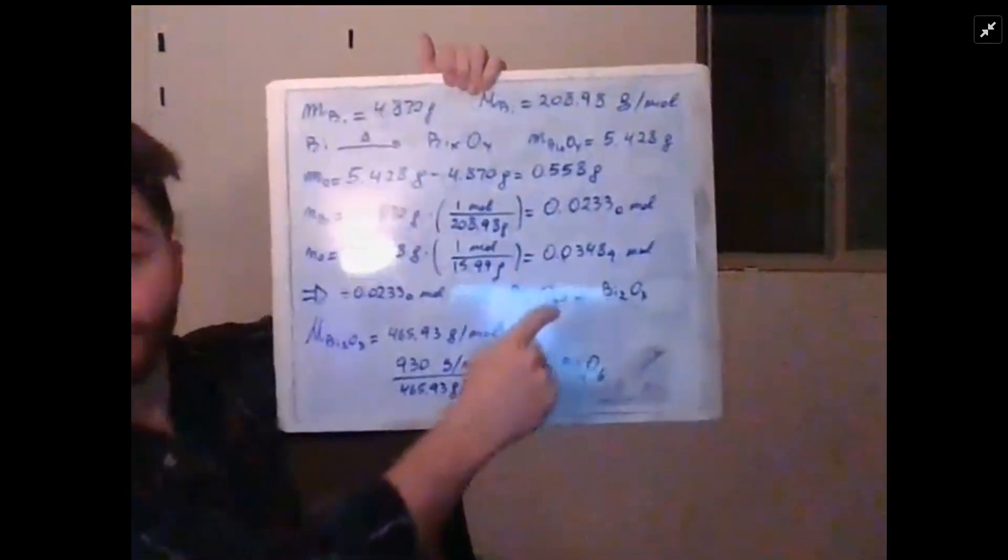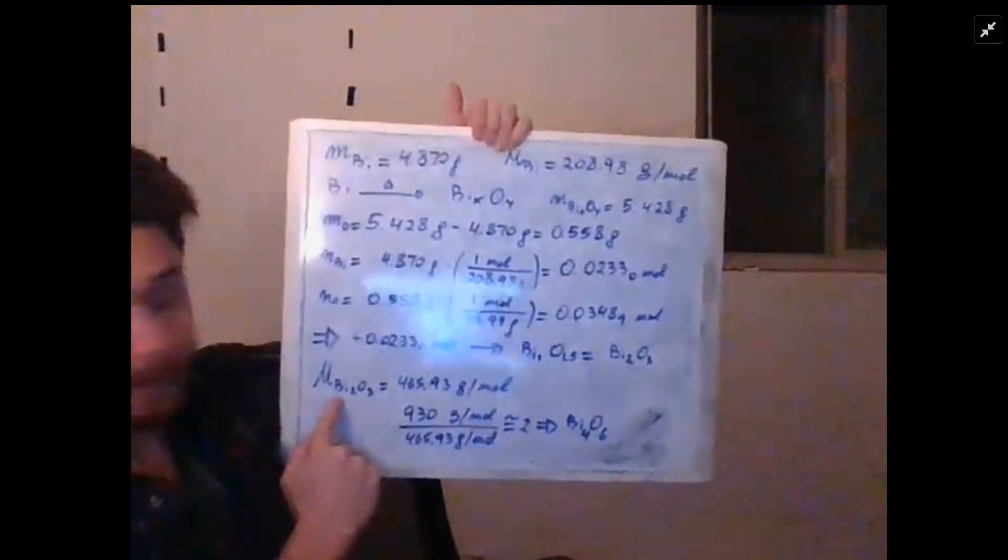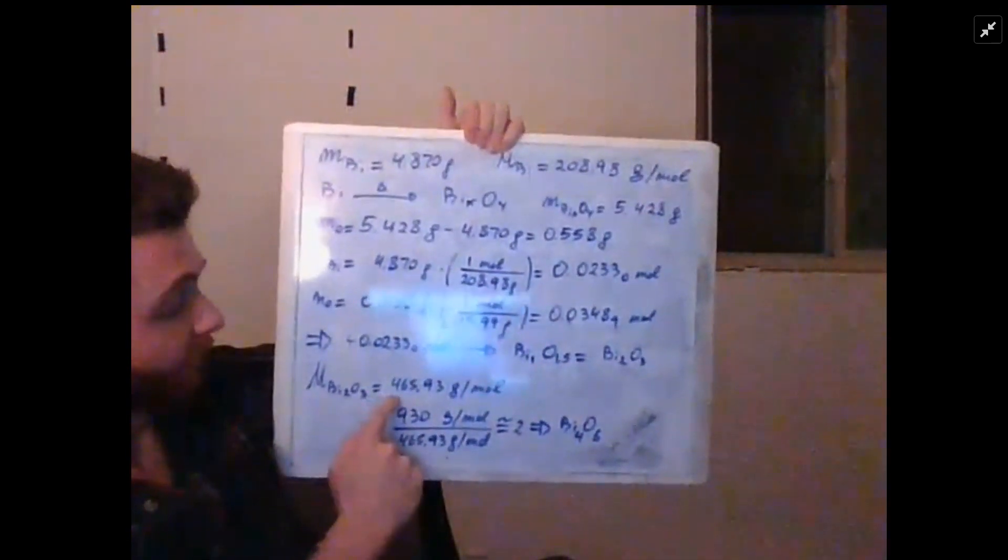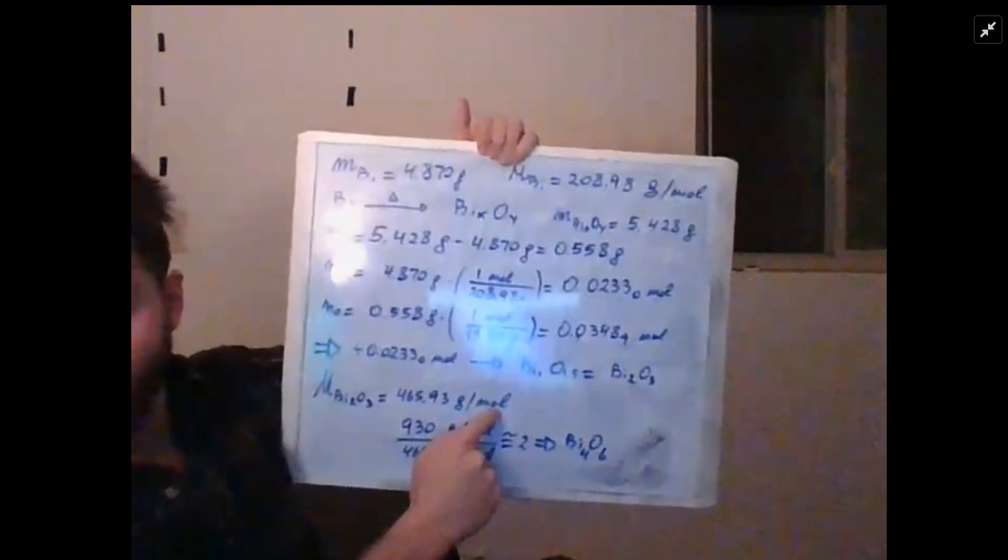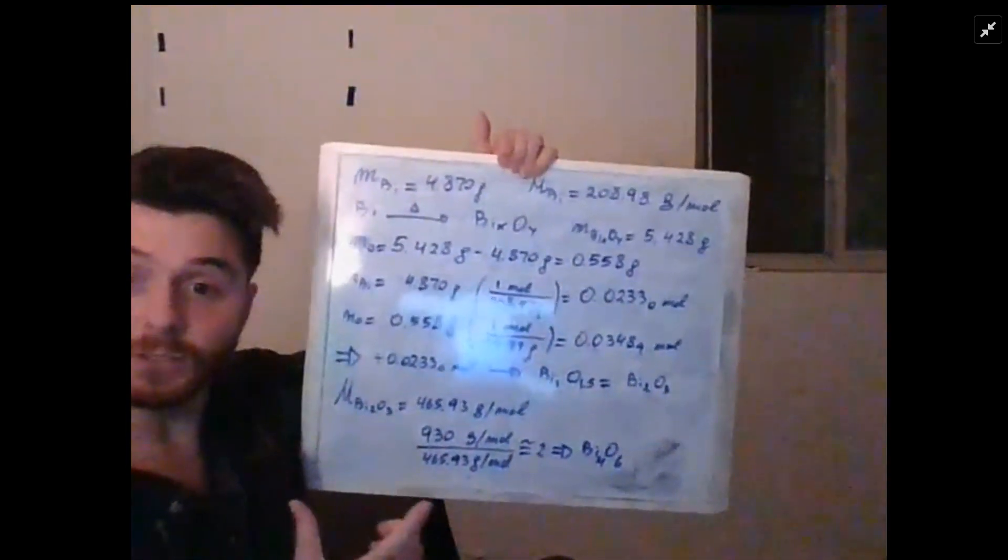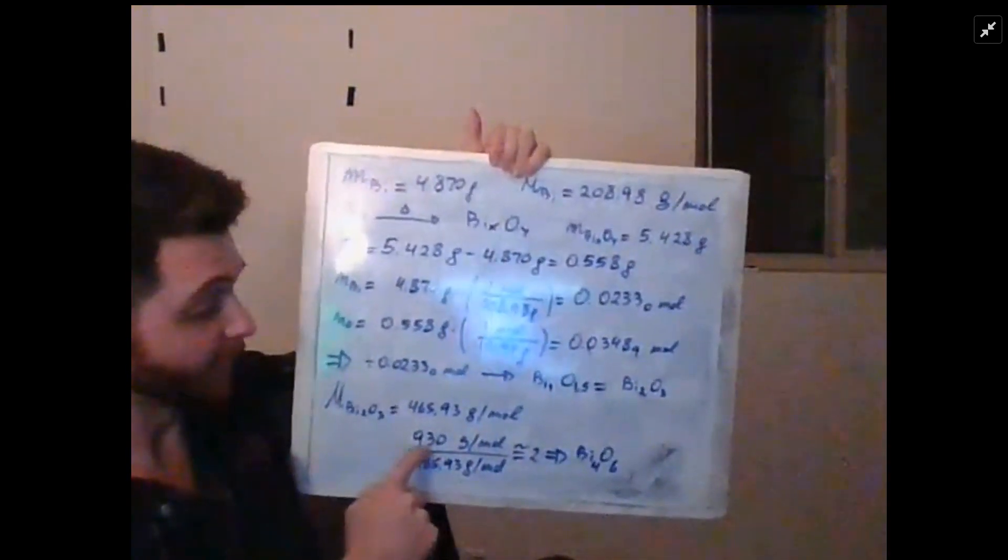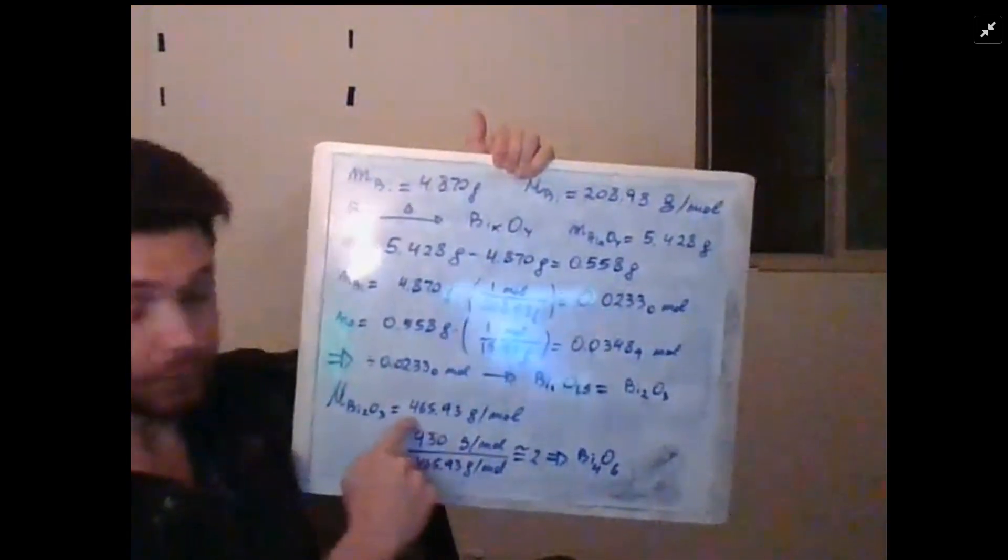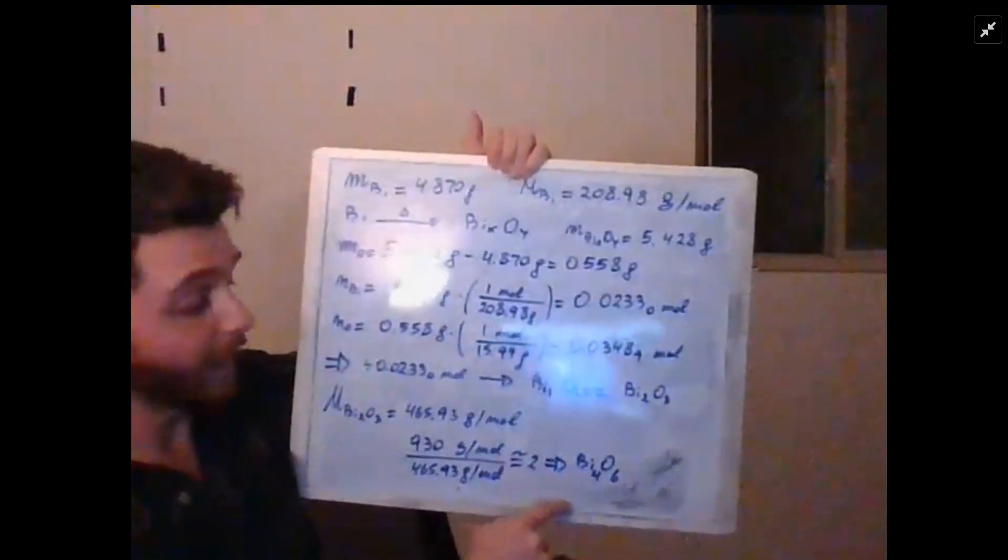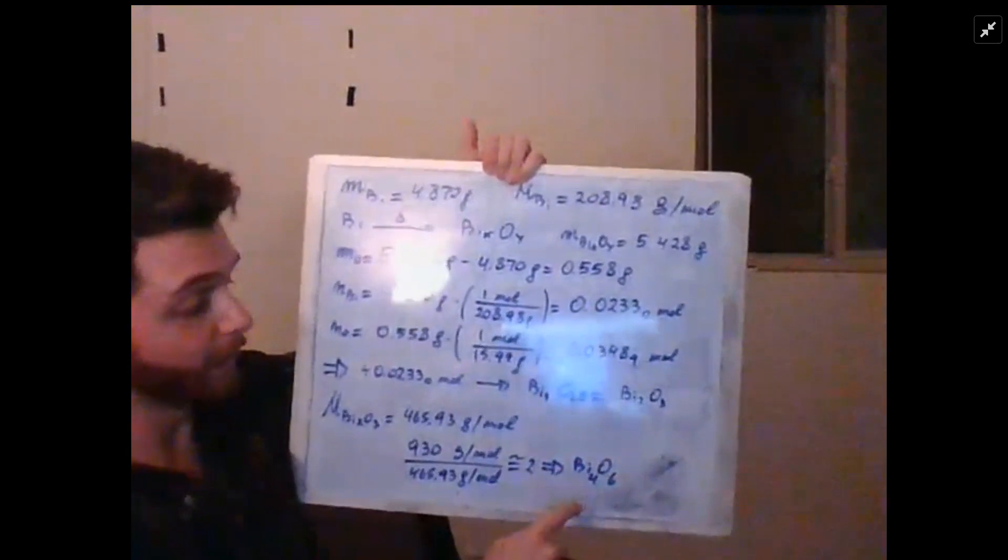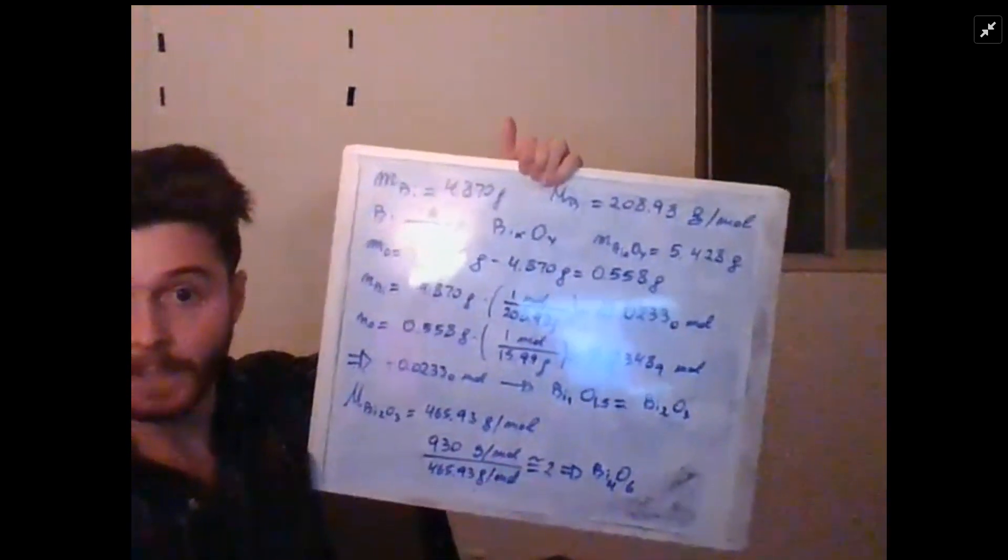What we do next is we compute the molar mass of this bismuth trioxide to be 465.93 grams per mole. We calculate the ratio of the value given, 930, over this one that we calculated, and we see that the ratio is around two. So the actual molecular formula would be Bi₄O₆.